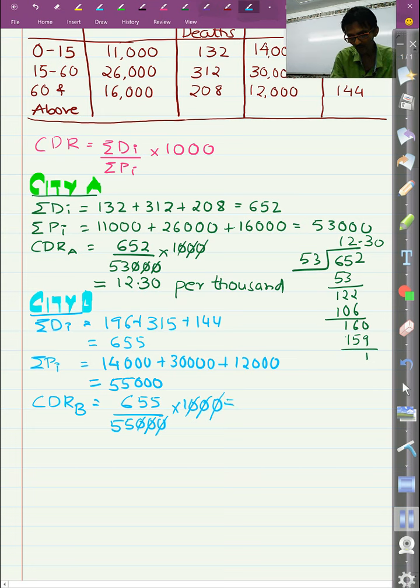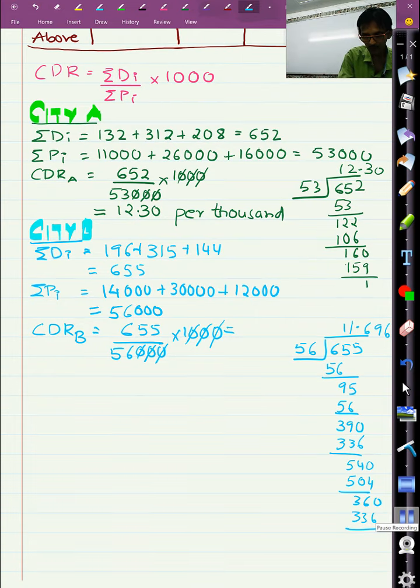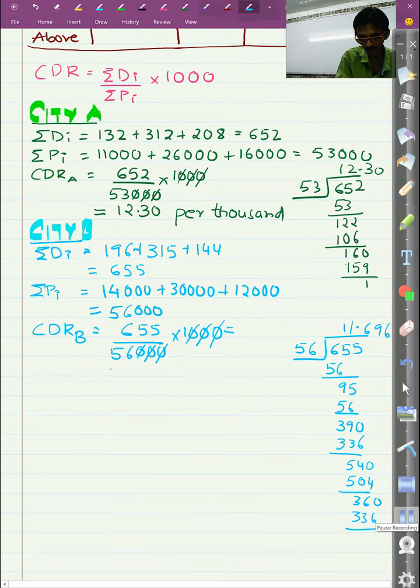And again, like last time, we do a simple calculation: 655 divide by 53. We get CDR as 11.696. We round off to two digits: 11.70 per 1000.